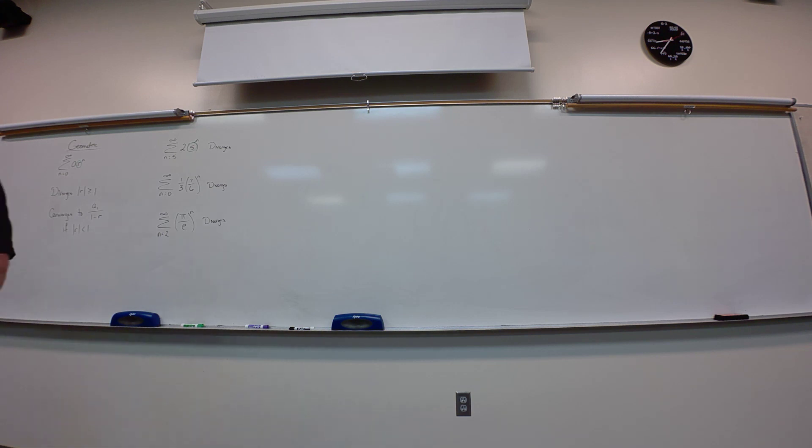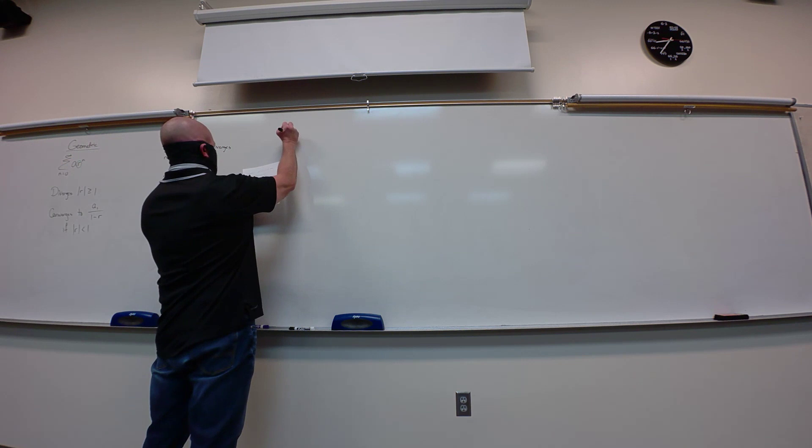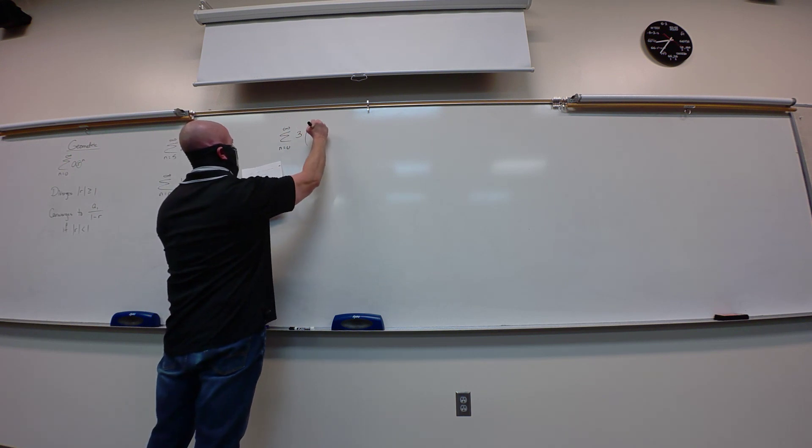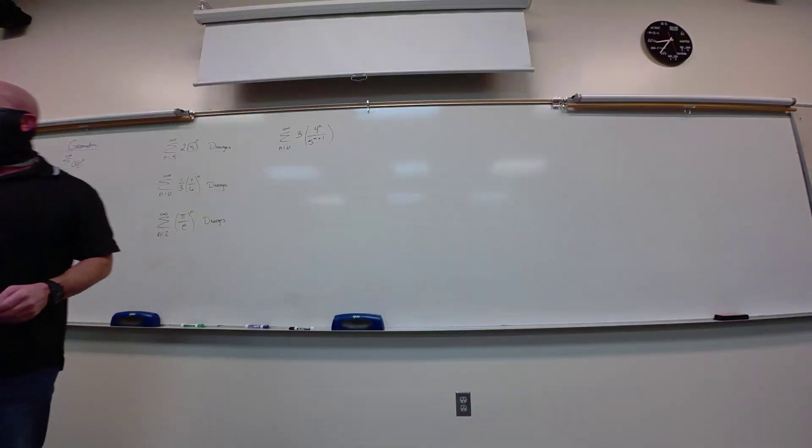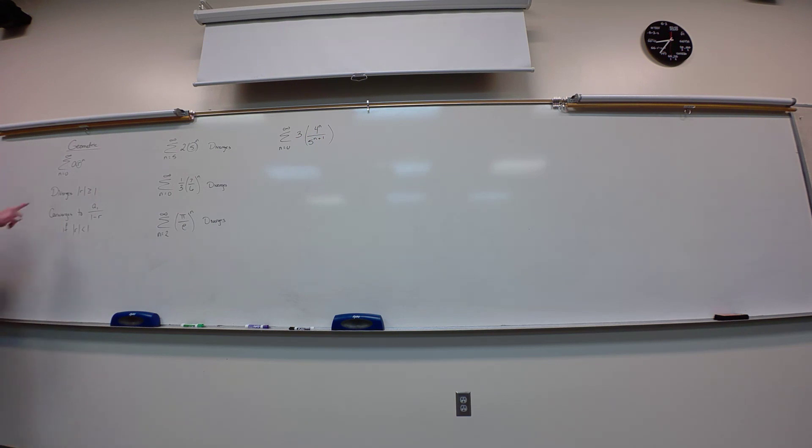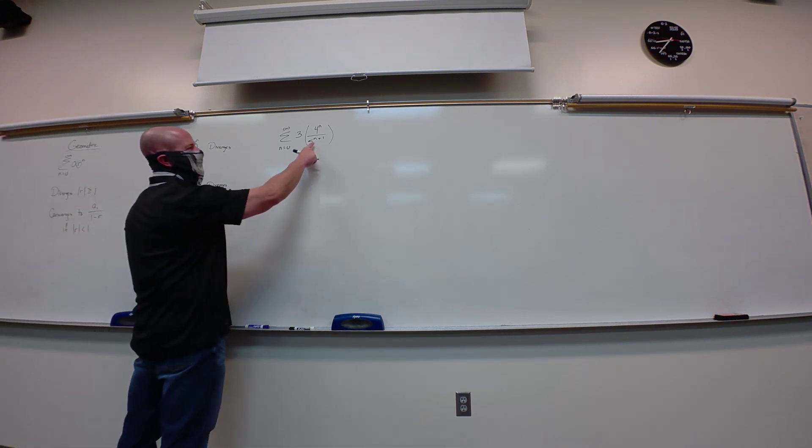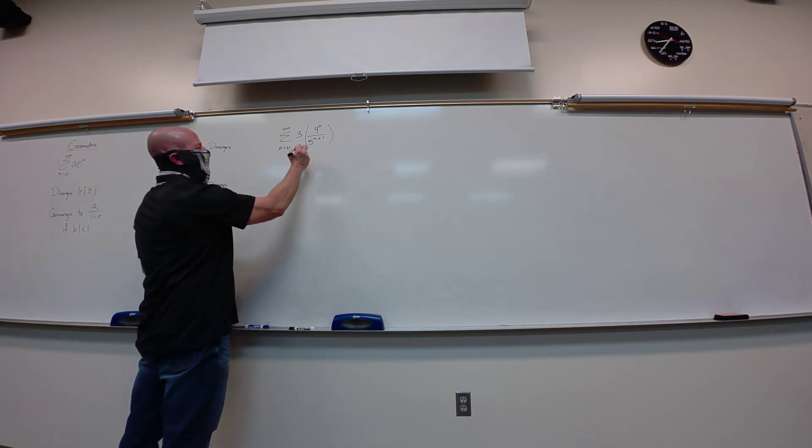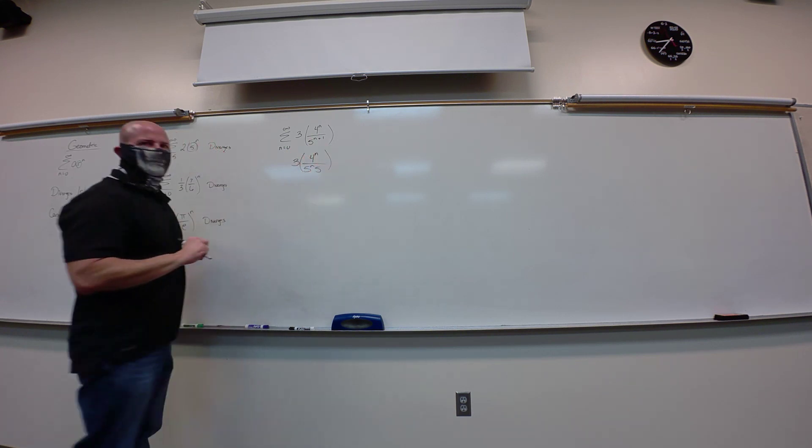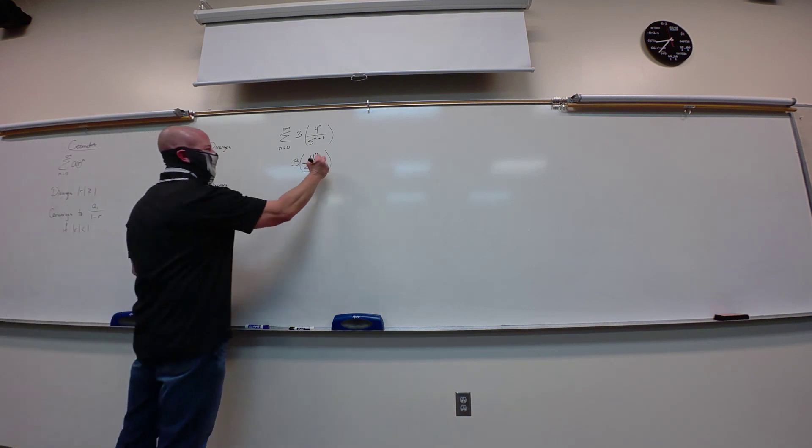If I saw the sum as n goes from zero to infinity of one-third times seven-sixths to the n, it still diverges. Why? Greater than one. Let's go sum as n goes from two to infinity, pi over e to the n. Also diverges. I don't have any clue what pi divided by e is, but I know it's bigger than one, because pi is bigger than e. That's all I needed to know.